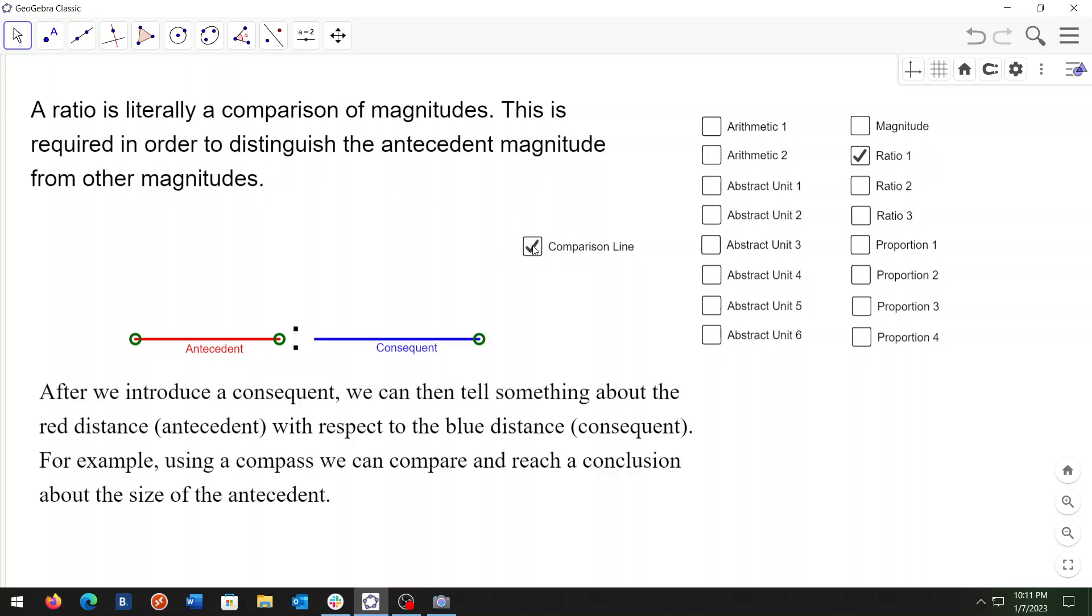After we introduce a consequent, we can then tell something about the red distance, antecedent, with respect to the blue distance, consequent. For example, using a compass we can compare and reach a conclusion about the size of the antecedent.